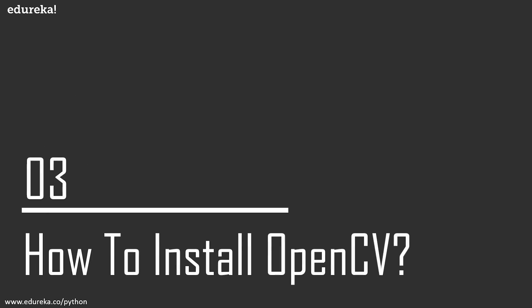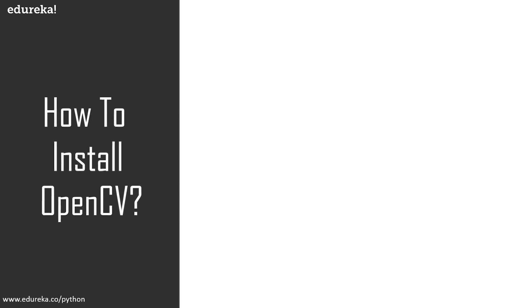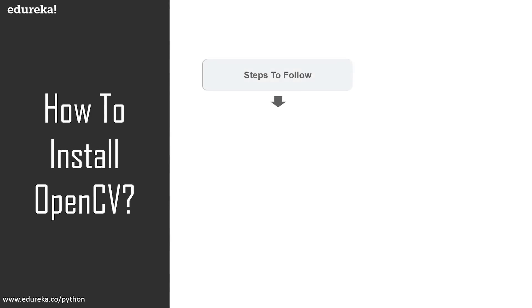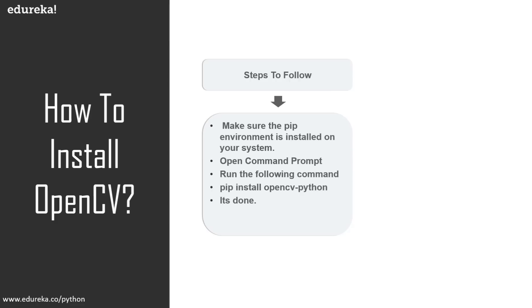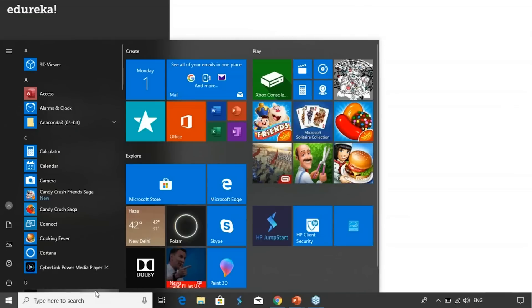Now let's take a look at how we can install OpenCV on Windows. Installing OpenCV is pretty easy — you just have to follow these steps. First, make sure that pip is installed on your system, then open the command prompt and run the command: pip install opencv-python. I'll now go to the command prompt and show you how it's done.